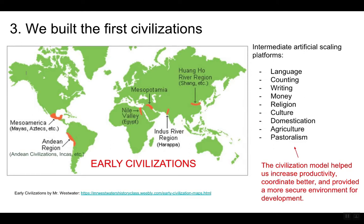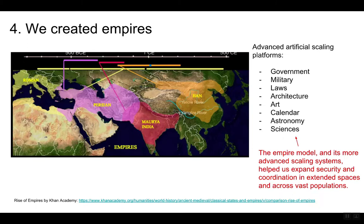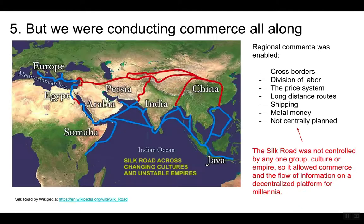We built the first civilizations. The civilization model helped us increase productivity, coordinate better, and provided a more secure environment for development. We created empires. The empire model and its more advanced scaling systems helped us expand security and coordination in extended spaces and across vast populations.